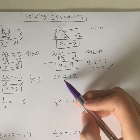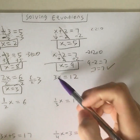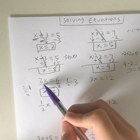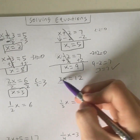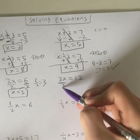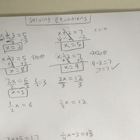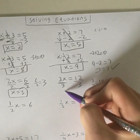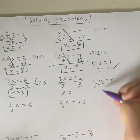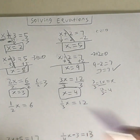Let's look at this example. You can pause the video if you want to try to solve it yourself. For this multiplication question — 3 times x — we divide by 3. Whatever we do on the left, we do on the right. 3 divided by 3 is 1, so we have 1x, which is just x. So x is equal to 12 divided by 3, which is 4. That's how you solve multiplication questions.